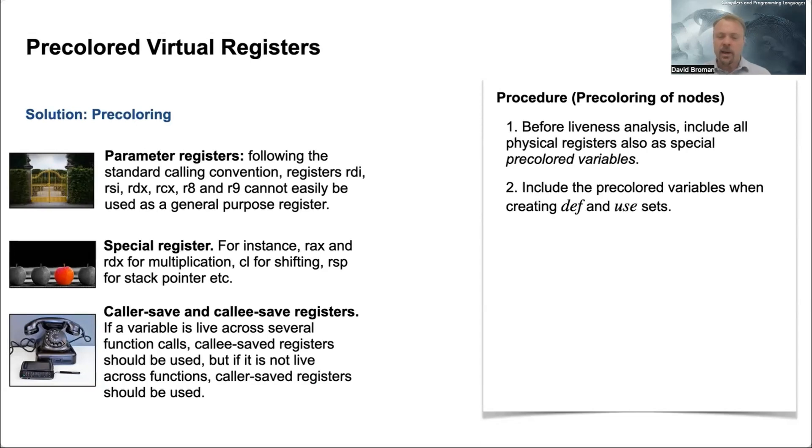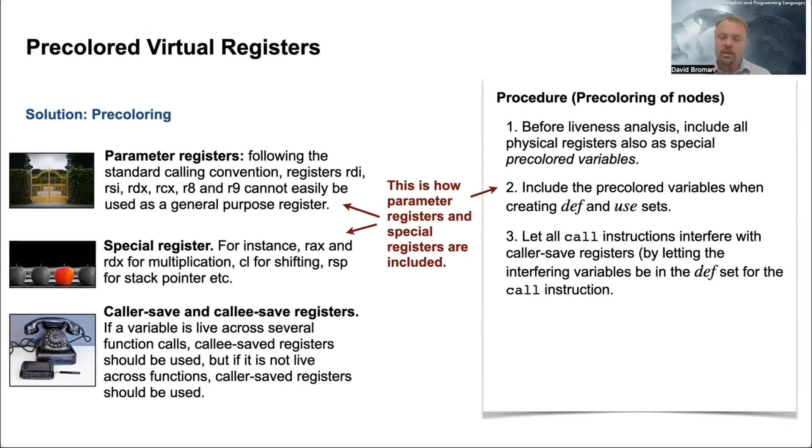So you basically extend the number of virtual registers or variables with pre-colored variables. We should include them and then create defs and use sets. So this is how you put in the constraints using defs and use for them. And you can handle both parameters and special registers in this way.